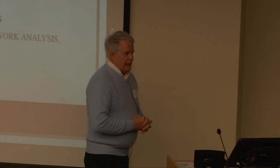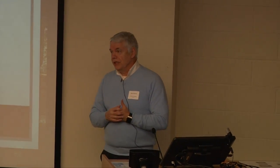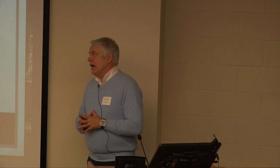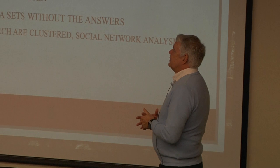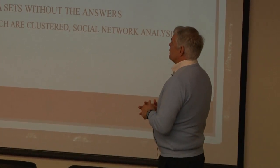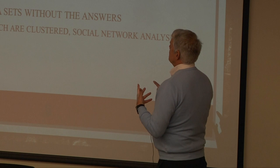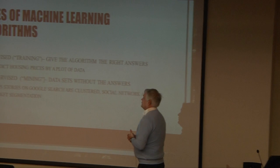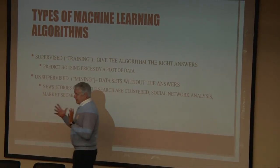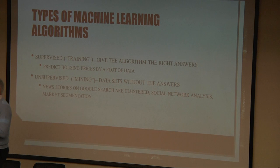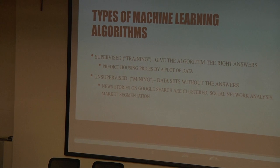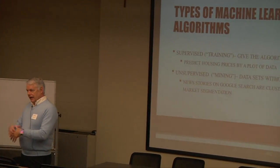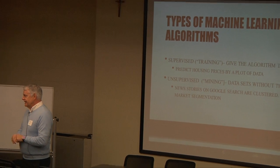There are two basic types of algorithms used in machine learning. One is called supervised, the other is called unsupervised. In supervised learning, the algorithm has the right answers in the data. For example, if we had a list of prices of houses and we were trying to predict how much we could sell a house for, the answer is already in the data.